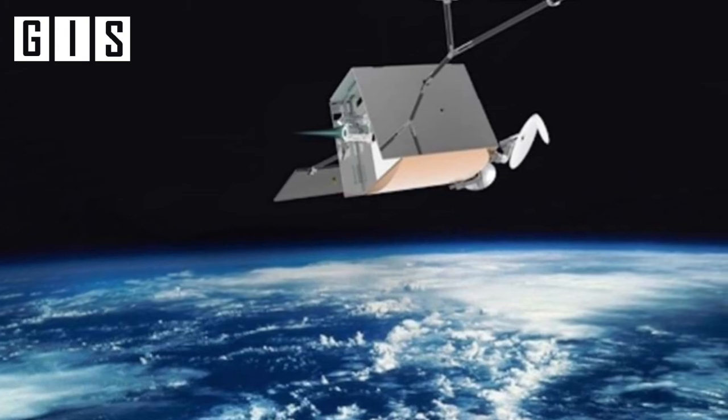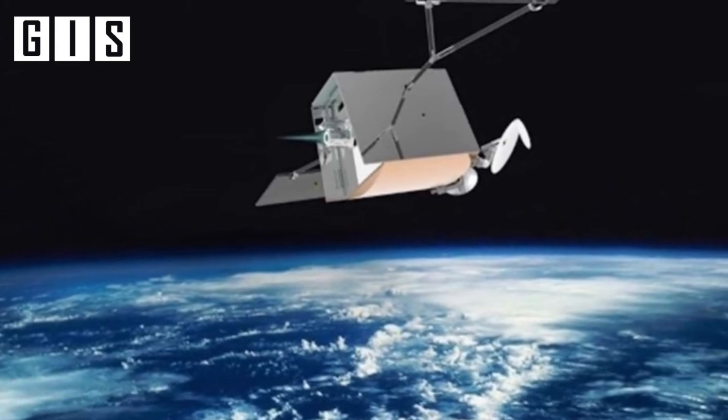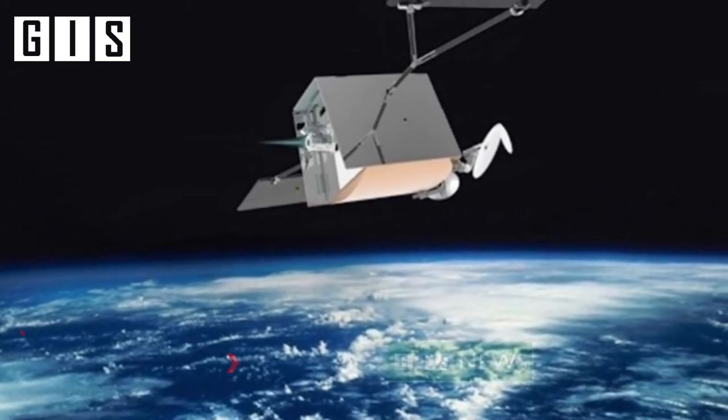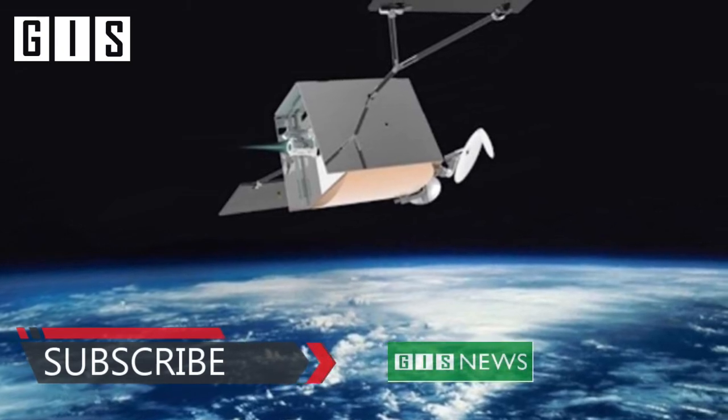OneWeb's satellites are in low-Earth orbit, but most other countries' GPS systems are in medium-Earth orbit, the Guardian noted.